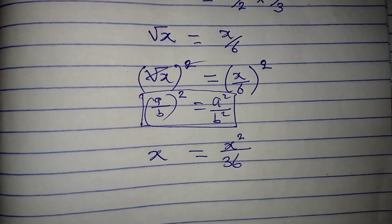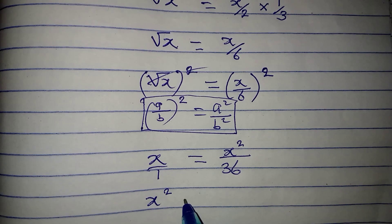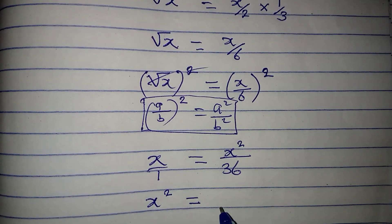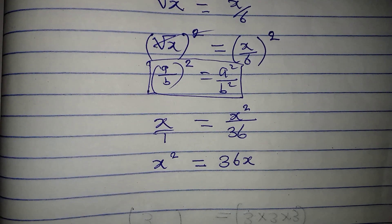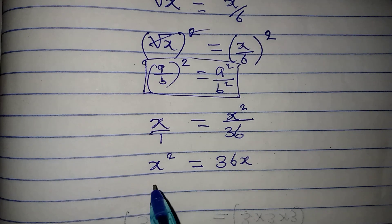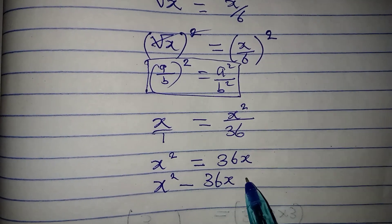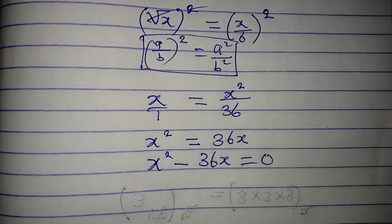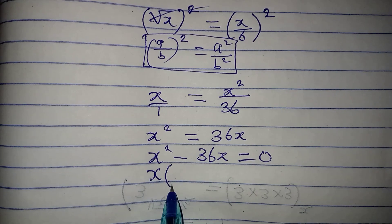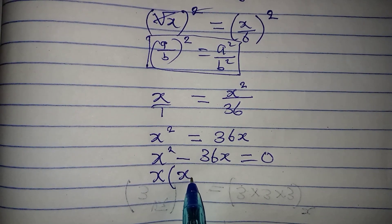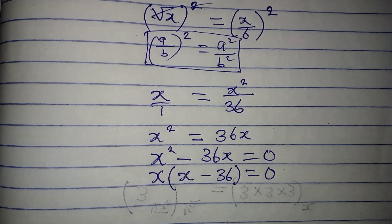Now I will cross multiply, since x is over 1. x squared times 1 is x squared, equal to x times 36, which is 36x. Bringing everything to the left gives x squared minus 36x equals 0. This is a quadratic equation we can solve by factorization.